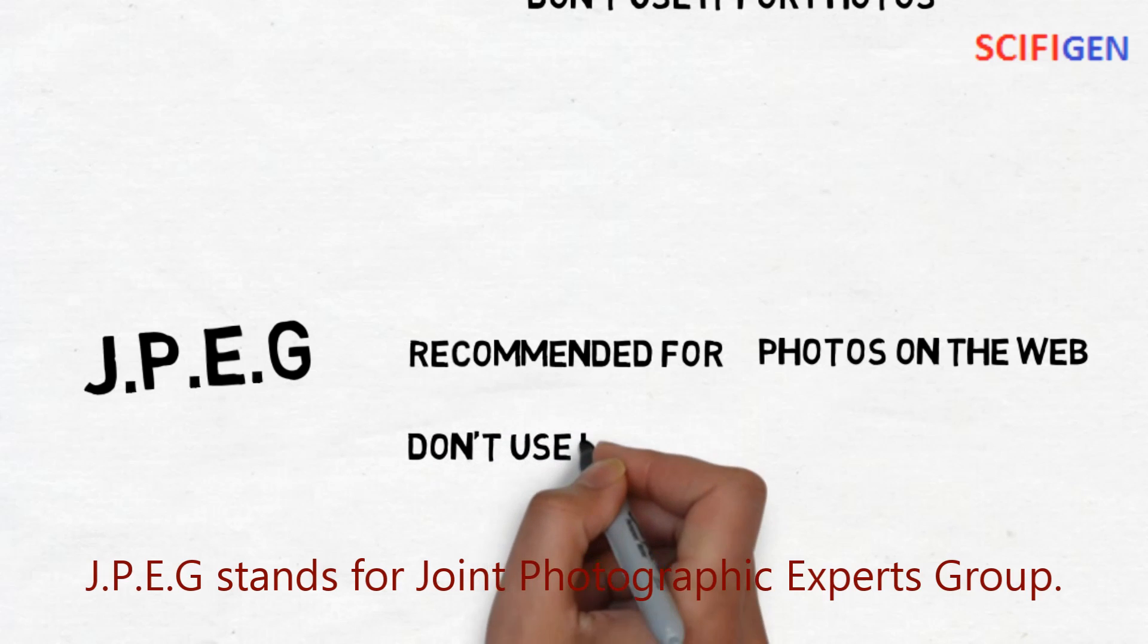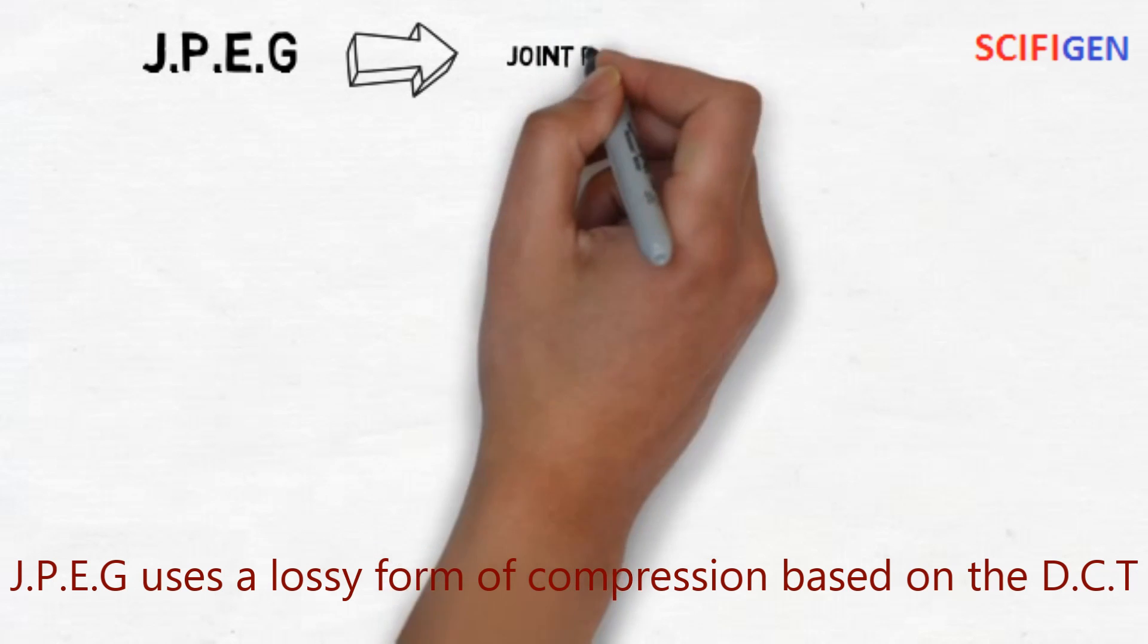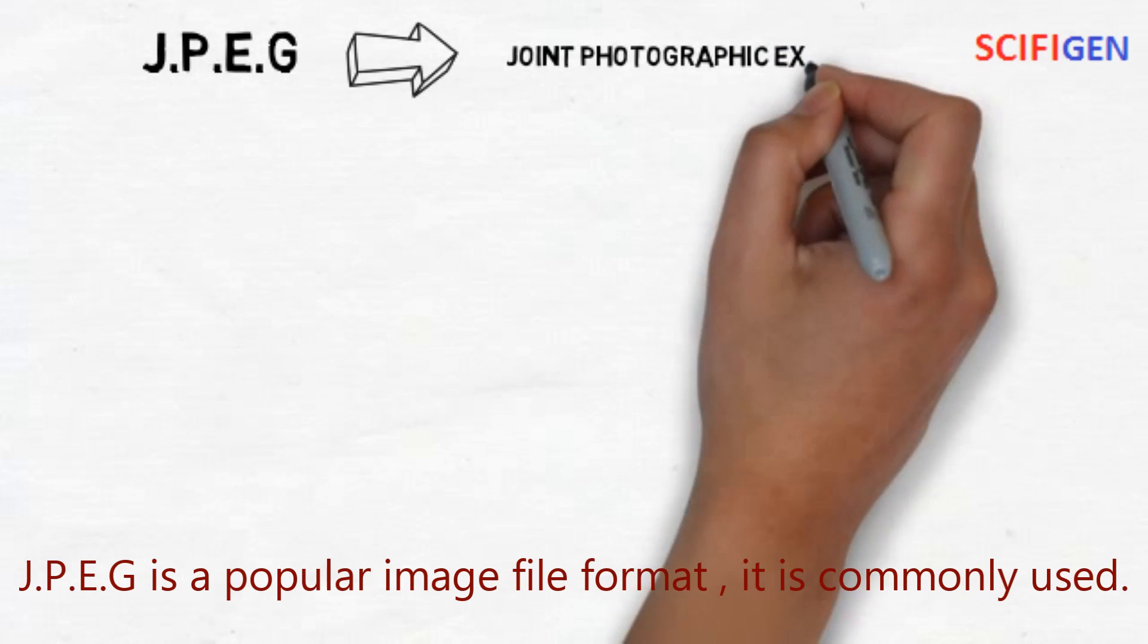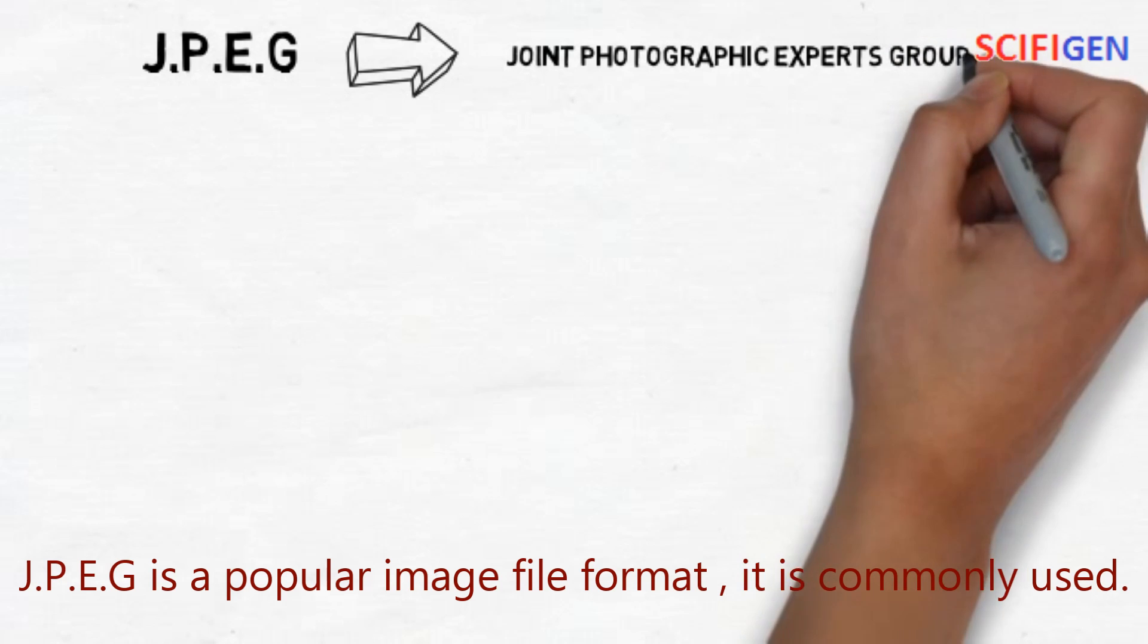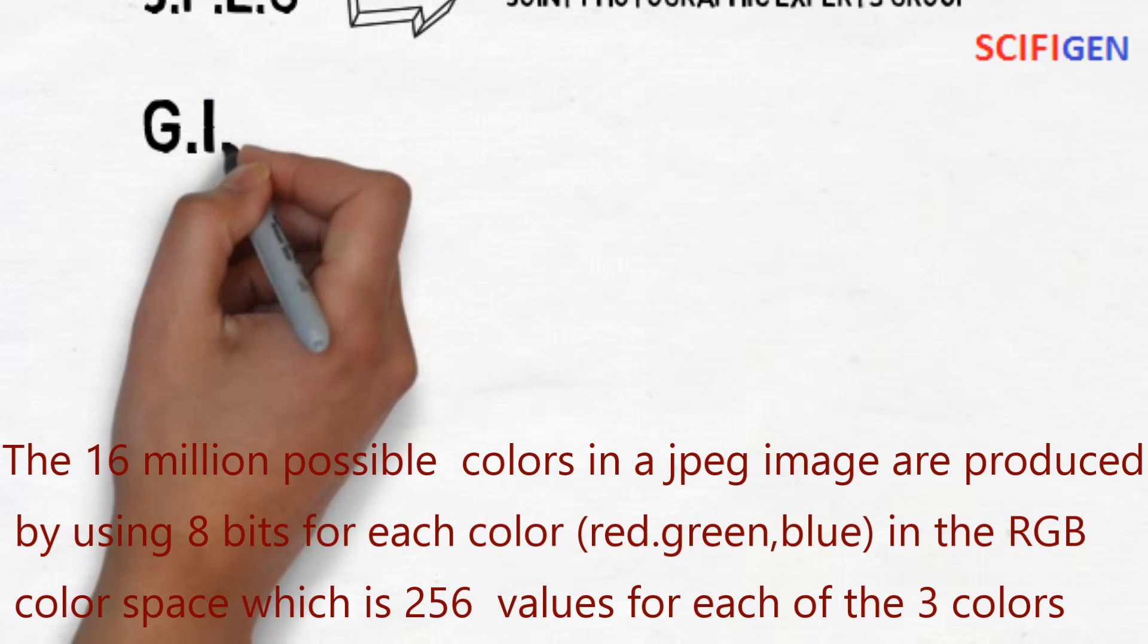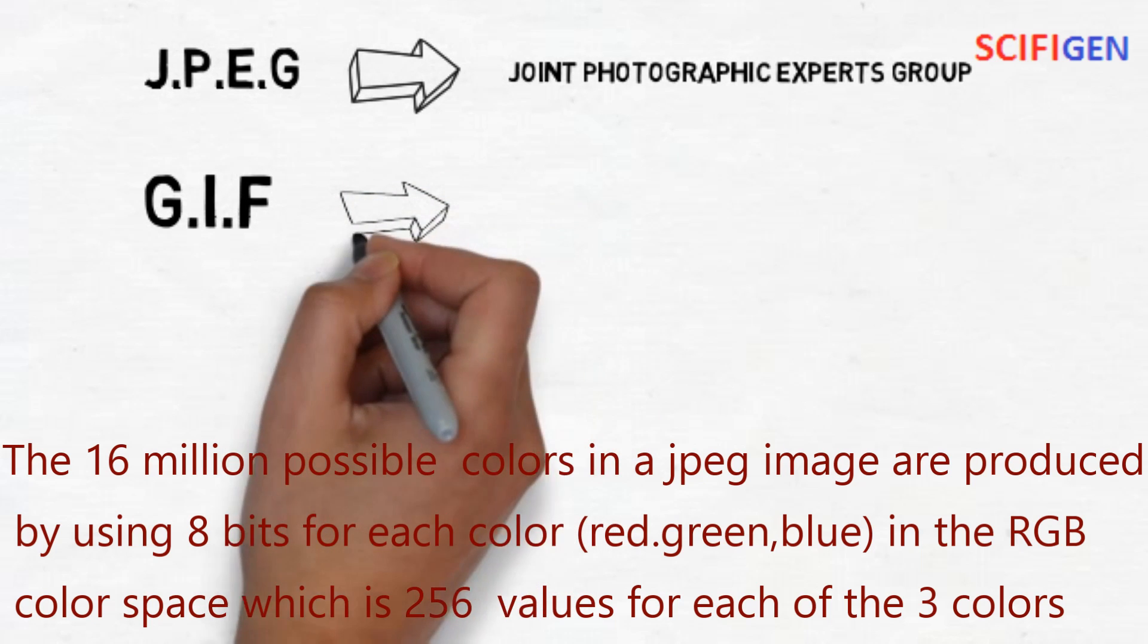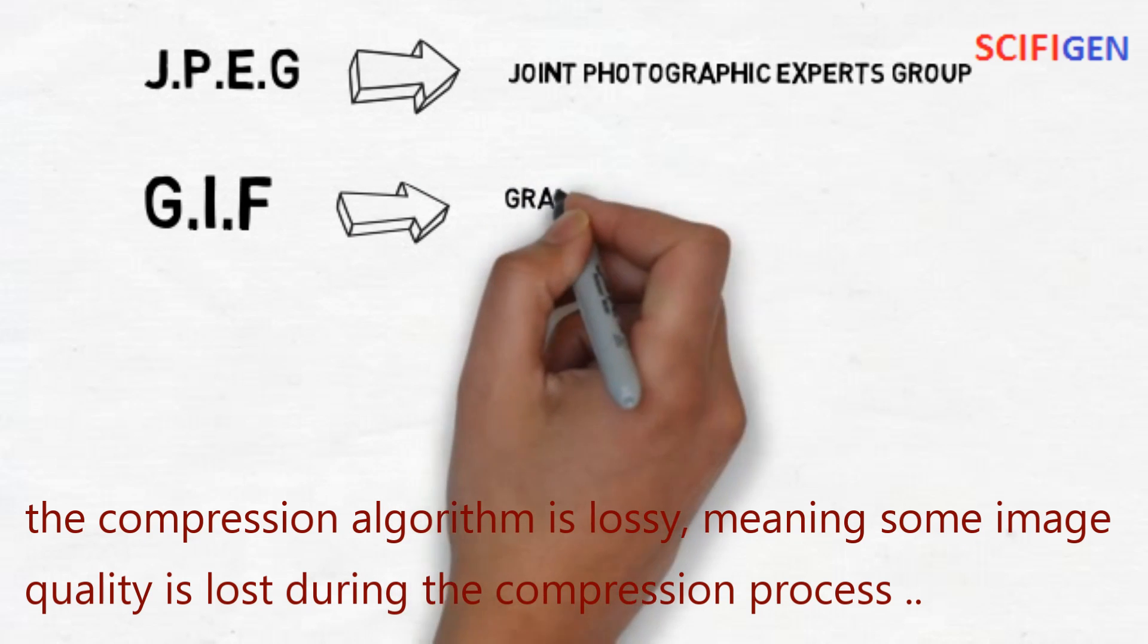JPEG stands for Joint Photographic Experts Group. JPEG uses a lossy form of compression based on DCT, which is discrete cosine transform. The 60 million possible colors in a JPEG image are produced by using 8 bits for each color in the RGB color space, which is 256 values for each of the three colors. The compression algorithm is lossy, meaning some image quality is lost during the compression process.